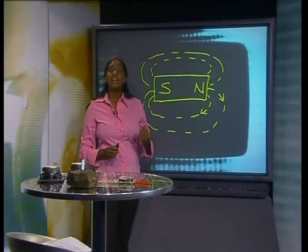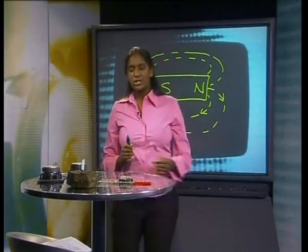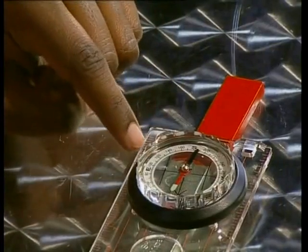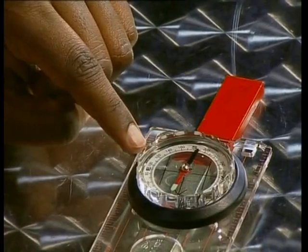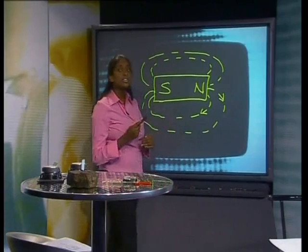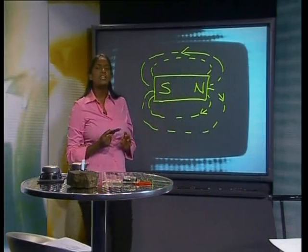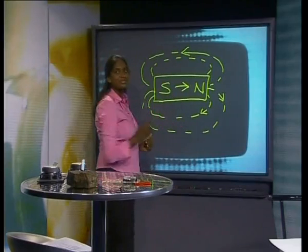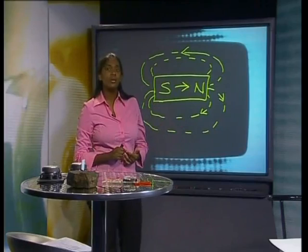But there is something else that is very interesting that we can observe when I place a compass on top of the magnet at the south pole. Notice that it points to the north pole. The compass needle is aligned with the magnetic domains of the magnet. So the magnetic force field direction outside the magnet is from north to south. But on the inside of the magnet, the field runs from south to north.